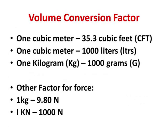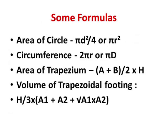For volume conversion, 1 cubic meter equals 35.3 cubic feet. One cubic meter is also 1000 liters. One kilogram is 1000 grams. The force factor: 1 kg is 9.8 newtons and 1 kilonewton is 1000 newtons. Some important formulas: the area of a circle is πd²/4 or πr².